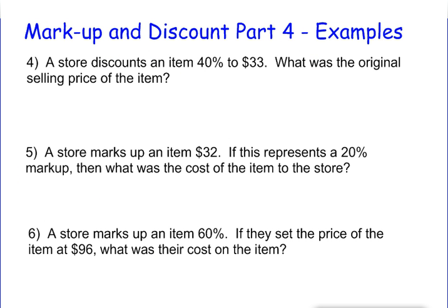For the first one, it says a store discounts an item 40%, so we have the percent discount, and it discounts it to $33, and so the $33 represents the sale price. Our goal is to find the selling price,